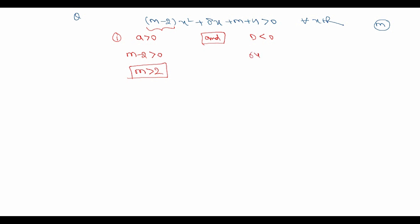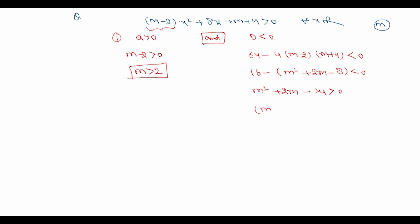Now solving D < 0: we get 64 - 4(m - 2)(m + 4) < 0. Dividing by 4 gives 16 - (m² + 2m - 8) < 0, which becomes m² + 2m - 24 > 0. Factorizing gives (m + 6)(m - 4) > 0. Using a sign chart with roots -6 and 4, either m < -6 or m > 4.